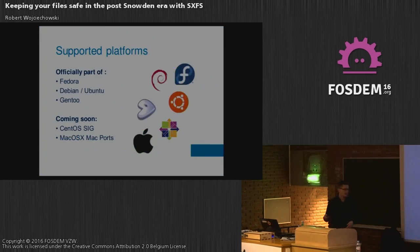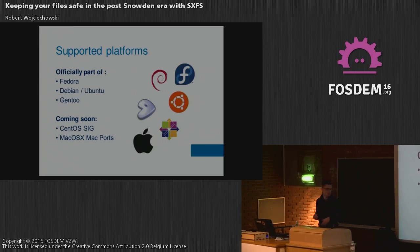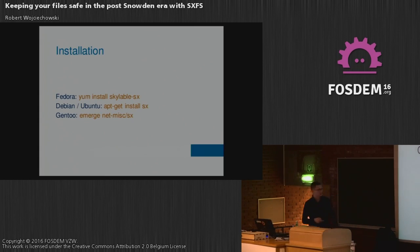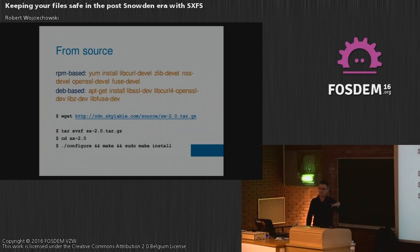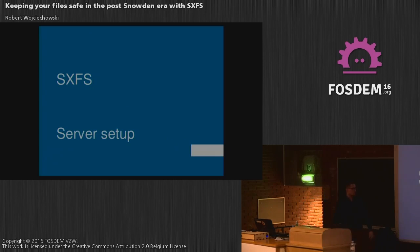So let's get started. How can you use SXFS? It is already part of a couple of common distributions — it is part of Fedora, Debian, and we have an ebuild for Gentoo. We plan to become part of CentOS SIG and macOS via MacPorts. Installation is fairly easy. On RPM-based systems, you just install skytools-sx. On Debian-based, you install the SX package. On Gentoo, you install SX from net-misc. If you want to download sources, you have a couple of dependencies to fulfill, then you just download the sources, extract them, and run configure, make, make install.